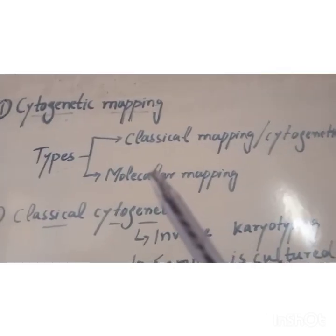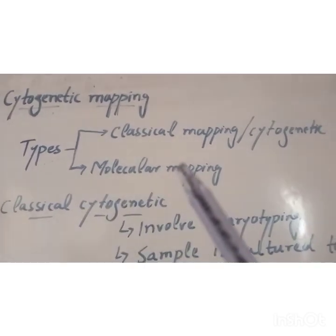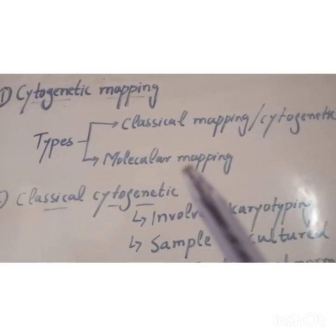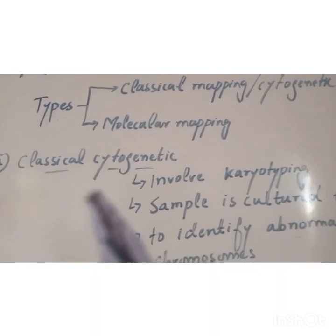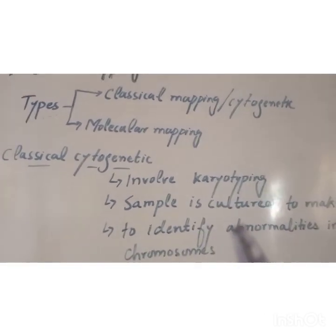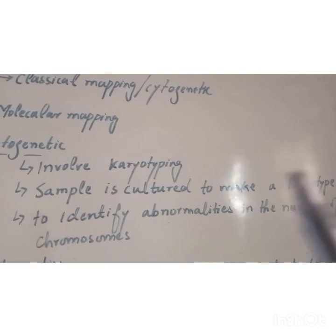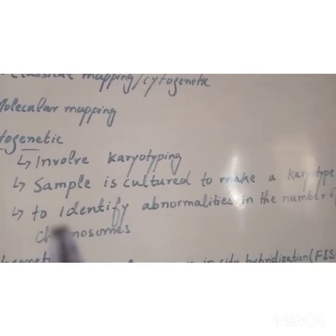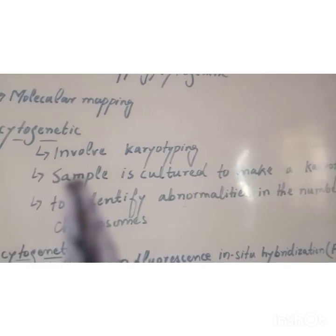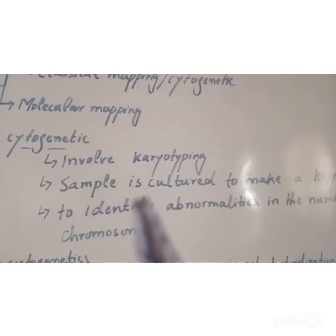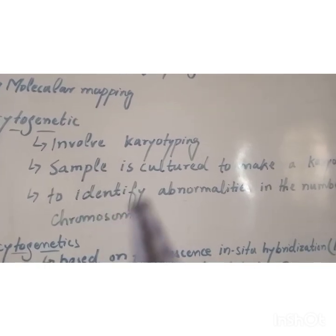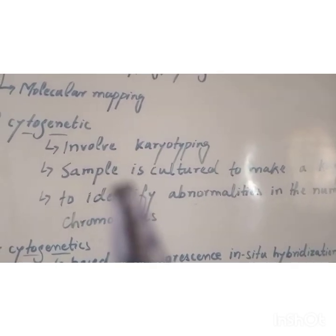Cytogenetic mapping consists of two types: classical cytogenetics and molecular cytogenetics. Classical cytogenetics involves karyotyping — the sample is cultured to make a karyotype. यह technique number of chromosomes की abnormalities को identify करने के लिए use की जाती है।